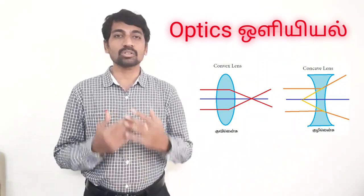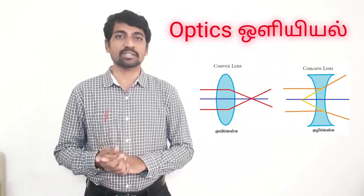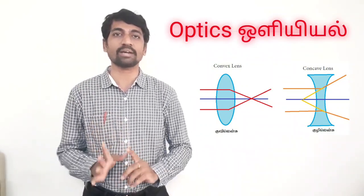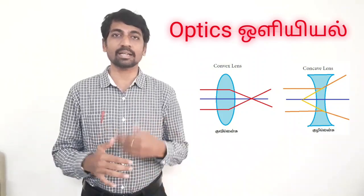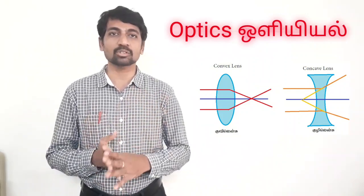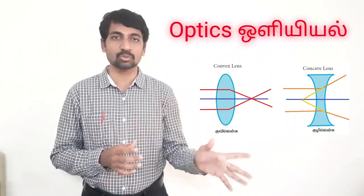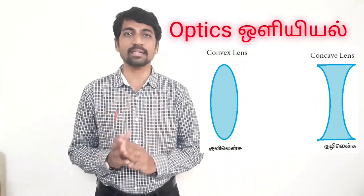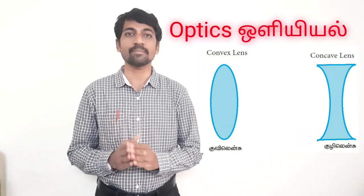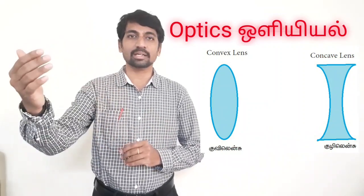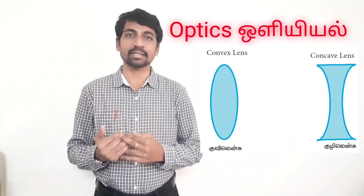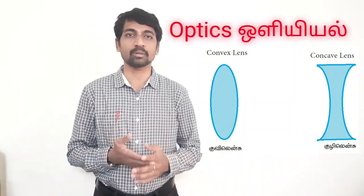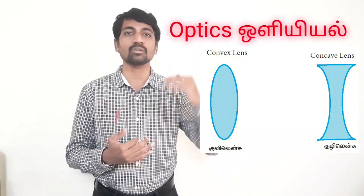A convex lens mostly forms a real image, except in one special case. A concave lens always forms a virtual image. Regarding eye defects, a convex lens is used to treat hypermetropia, where near objects are not seen clearly. A concave lens is used to treat myopia, where distant objects are not seen clearly.